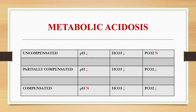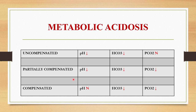Now we can see about uncompensated, partially compensated, and compensated metabolic acidosis. In metabolic acidosis, pH will be low and bicarbonate will also be low. So if it is uncompensated metabolic acidosis, pH will be low, bicarbonate will be low, and PCO2 will be normal. If it is partially compensated, pH will be low, bicarbonate will be low, and PCO2 will also be low. In case of fully compensated metabolic acidosis, pH will be normal, bicarbonate will be low, and PCO2 will also be low.